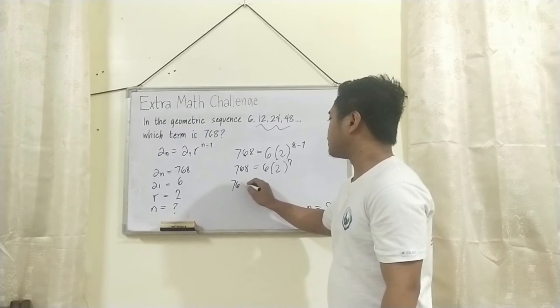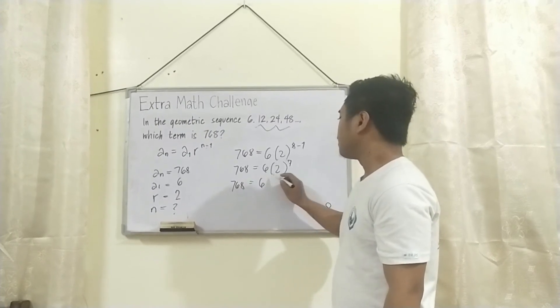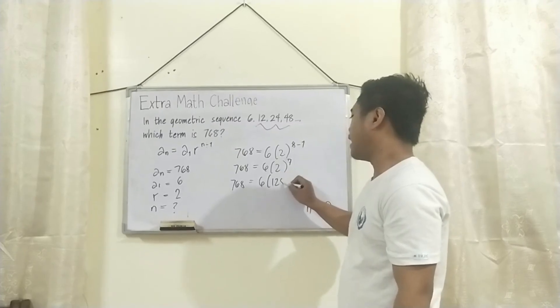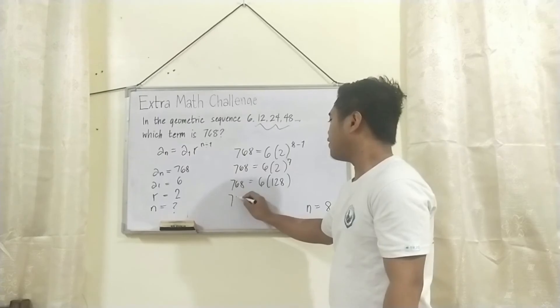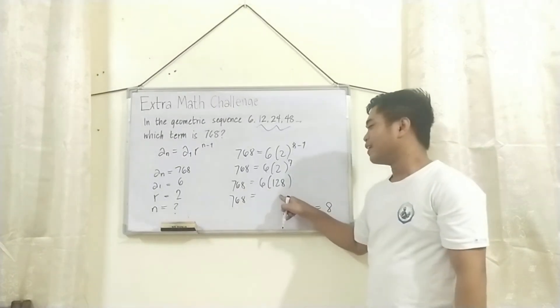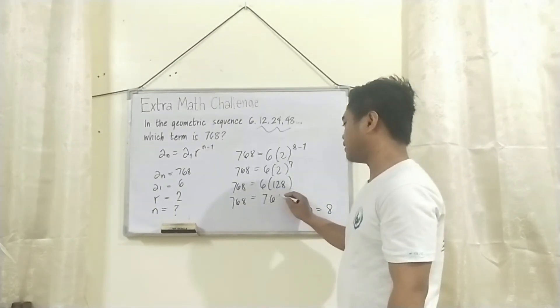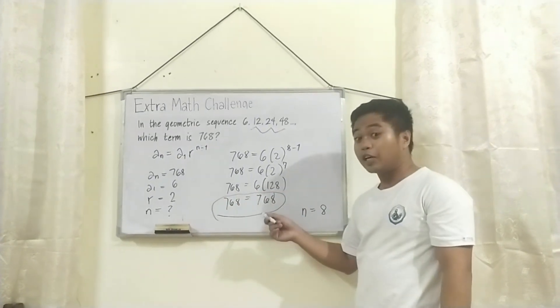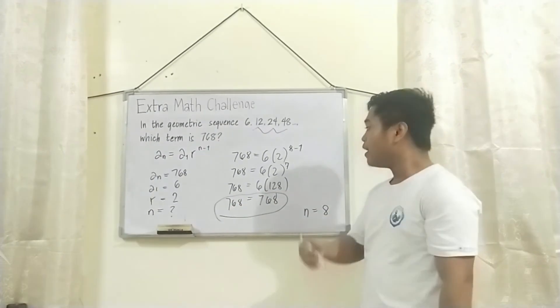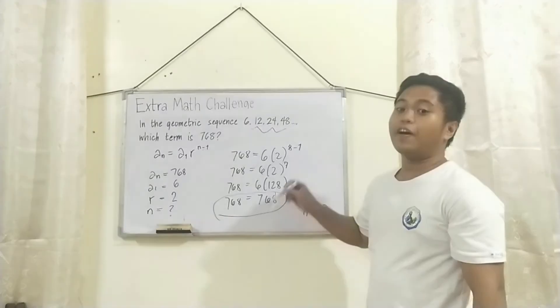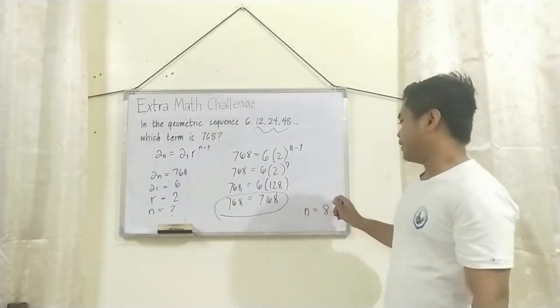Now, 768 is equal to 6 times 2 raised to 7 is 128. Ngayon, 768 is equal to 6 times 128 that is equal to 768. And 768 is equal to 768 which is tama. Yan yung nagpapahiwatig na tama yung nasolve natin na value na n, na si 8.